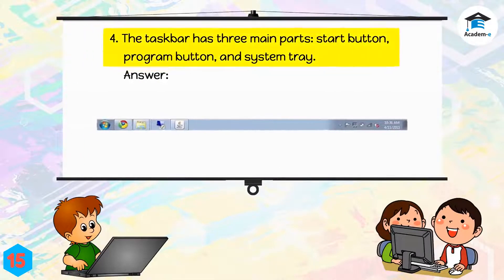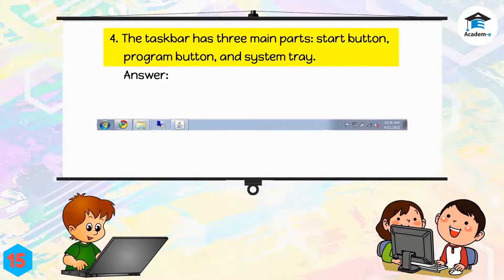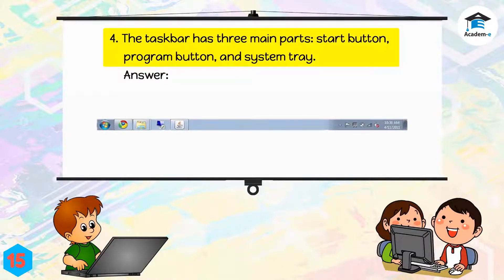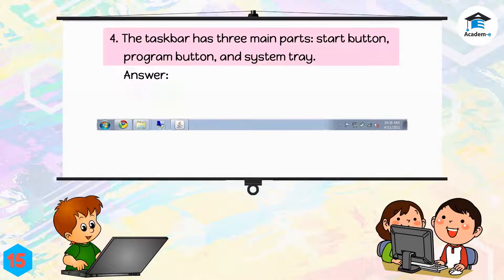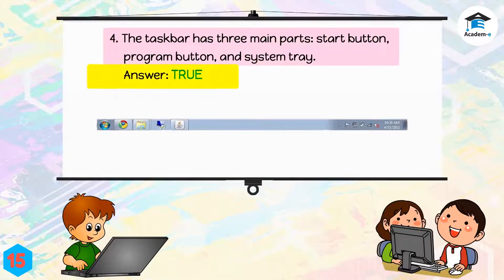Statement 4: The taskbar has three main parts — start button, program button, and system tray. The answer is true.